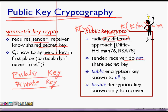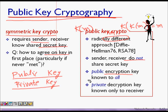My public key is known to all other people in the world. People who want to send a message to me will use my public key to encrypt the message. But that encrypted message can only be decrypted by me, since only I have the private key for decryption.